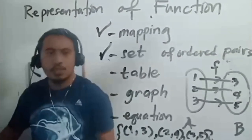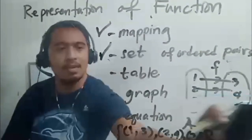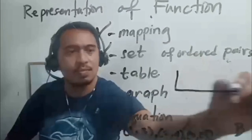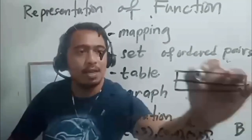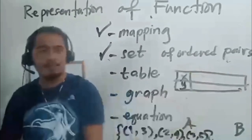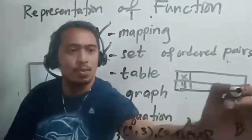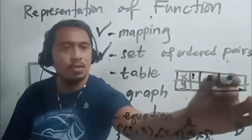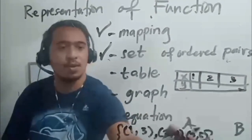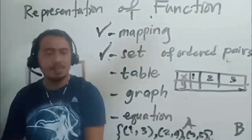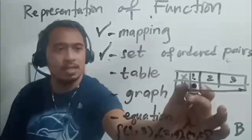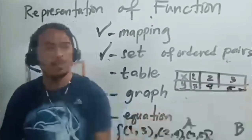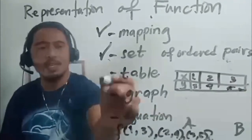Functions can also be represented using a table or tabular representation. In this case, we use x and y. There are 3 elements, so you will have 1, 2, 3 as the elements of your domain. Then 1 is assigned to 3, 2 is assigned to 4, and 3 is assigned to 5. So a function can be represented using a table.